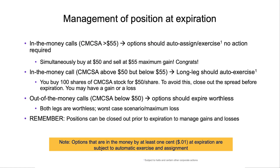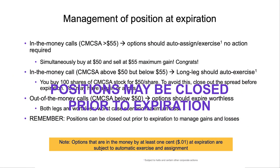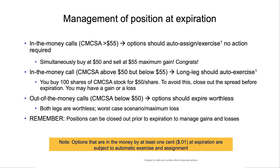Another important thing to remember is that positions can be closed out prior to expiration to manage the gain or loss — anytime you want. That was a 28-day option; you don't need to hold it all the way to 28 days. If the stock begins to move in your favor and you can close it out and capture that profit, you can certainly do that. If it begins to move against you and you're ready to take a loss, go ahead and close it out. Closing it out prior to expiration means you'll be closing at something less than maximum gain or less than maximum loss. These are tradable vehicles — just because there are multi-legs does not mean you can't close it out.